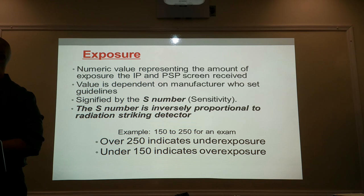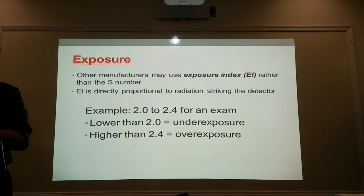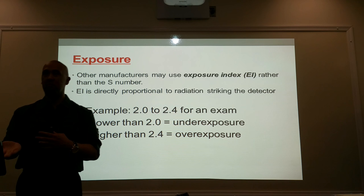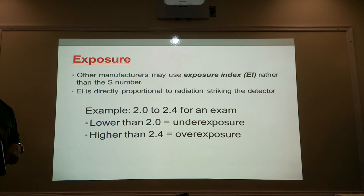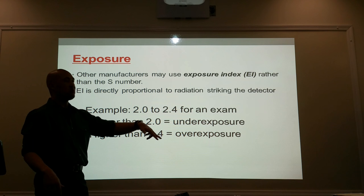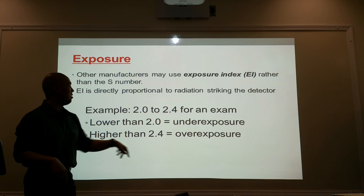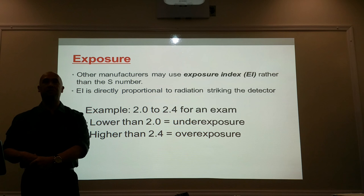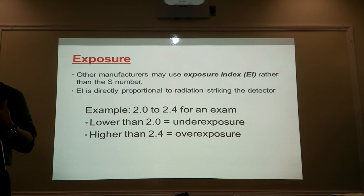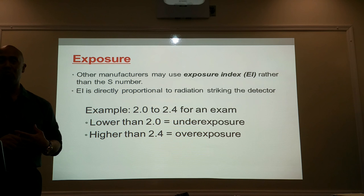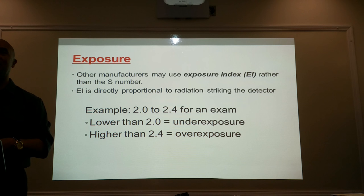The other number we're going to talk about is the EI, or the exposure index. It's also a number you'll find at the very top or bottom of your screen when the picture pops up. This one is a little more legible, easier to understand. For a chest x-ray, the range is between 2.0 and 2.4. If my number is over 2.4, that means I overexposed my patient. Under 2.0 means underexposed. If it's between 2.0 and 2.4, you're safe and the patient's safe. Not only are these numbers good for patient exposure, but since we're in the procedural room, if the patient is within safe limits, we are also under safe limits.